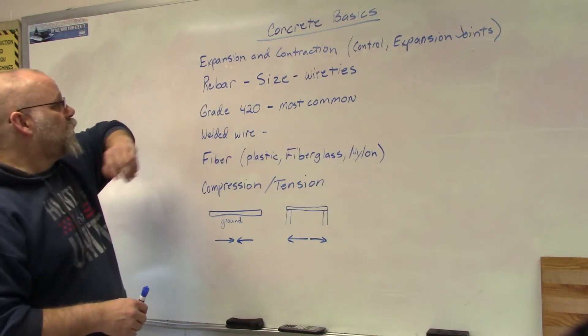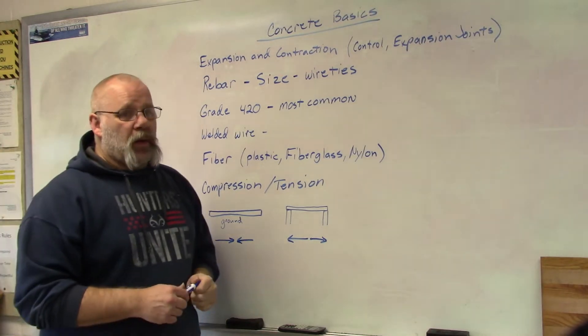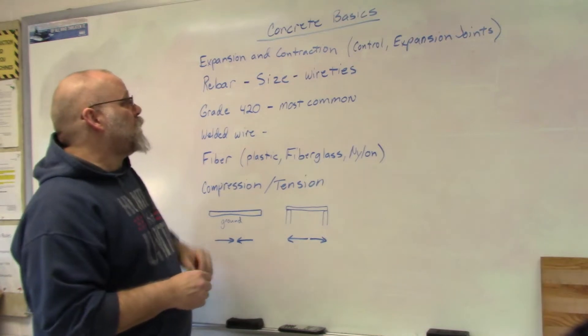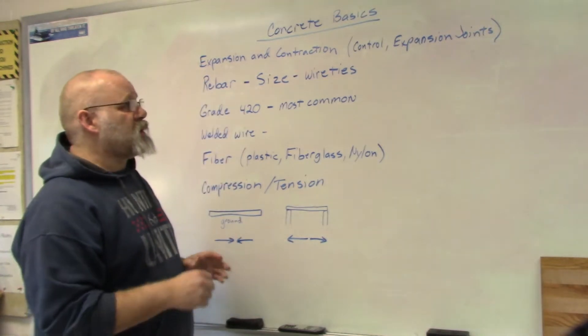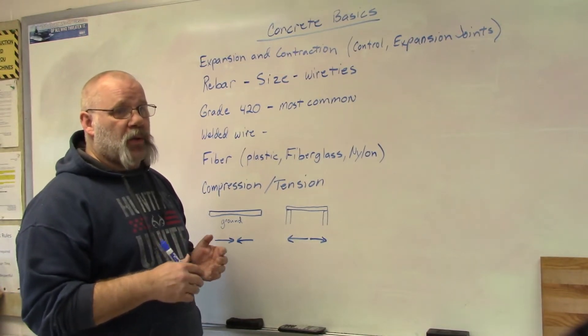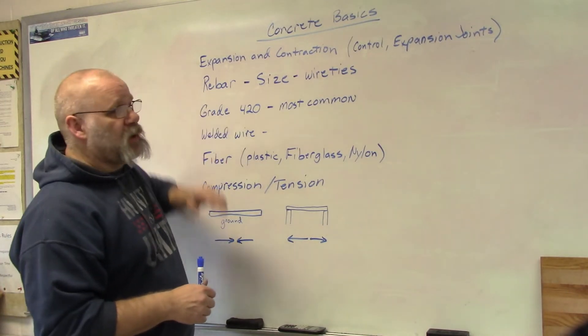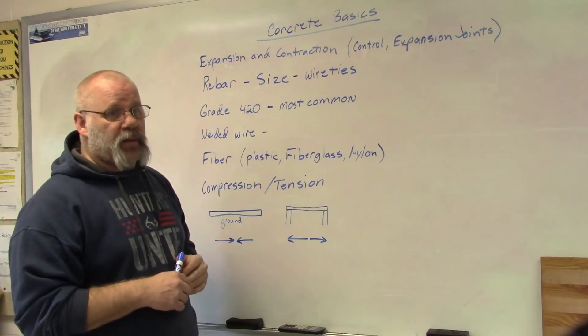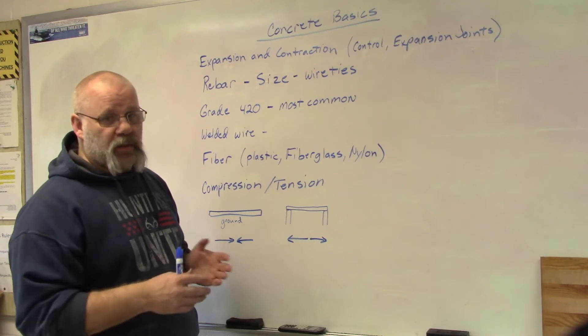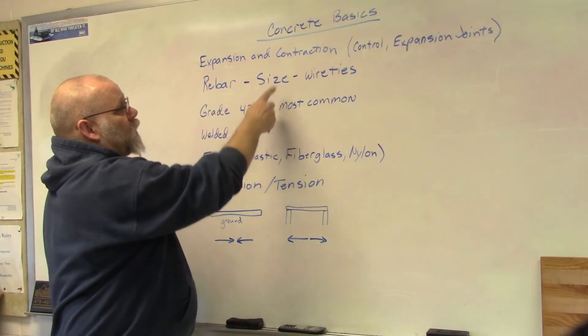So what do we put in our concrete? The first thing we're going to talk about is rebar. Rebar is a metal, a steel. The reason they use steel is because steel has the same expansion rate as the concrete. So if the concrete expands, the rebar will expand also. If you put something in there that doesn't expand at the same rate, then one's going to be pulling against the other one, it's going to weaken your concrete and eventually it's going to break.